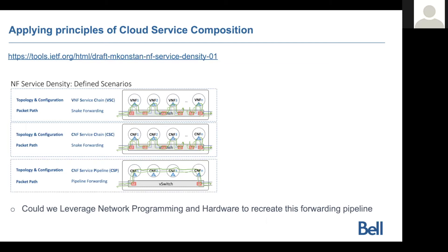The question I'm asking is: how can we leverage network programming models and new programmable hardware with P4 and others to recreate this forwarding pipeline with higher speed and lower latency capabilities?